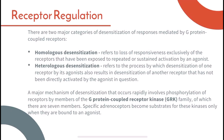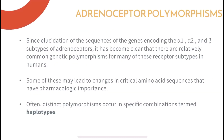A major mechanism that occurs rapidly involves phosphorylation of receptors by members of the G-protein coupled receptor kinase family. Specific adrenoceptors become substrates of these kinases only when they are bound to an agonist. For adrenoceptor polymorphisms, since elucidation of the sequences of genes encoding alpha-1, alpha-2, and beta subtypes of adrenoceptors, it has become clear that there are relatively common genetic polymorphisms for many of these receptor subtypes in humans. Some of these may lead to changes in critical amino acid sequences that have pharmacologic importance. Distinct polymorphisms occur in specific combinations termed haplotypes.